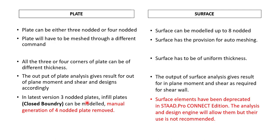In the latest version, you must require a closed boundary in order to create a 4-noded plate — otherwise it is not possible. So currently, you can create a 3-noded plate, or you require a closed boundary of beams and nodes in order to complete a 4-noded plate.